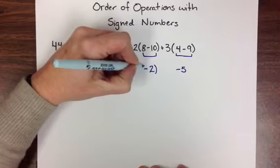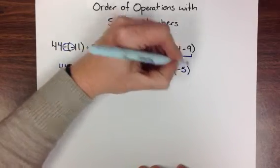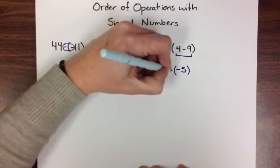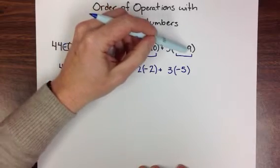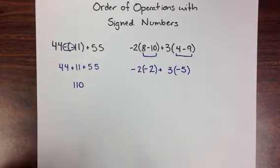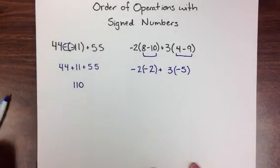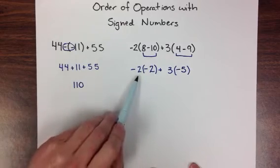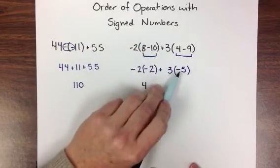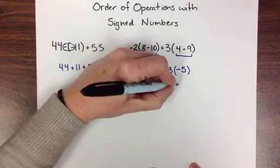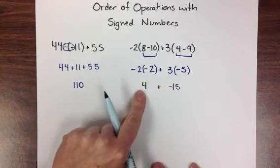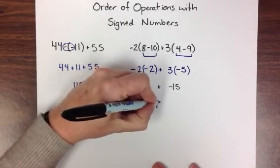I'm going to keep the parentheses even though I've completed the math inside, as a reminder of what is going on between the 3 and that negative 5, and the 2 and the negative 2 — because that operation is multiplication. Negative 2 times negative 2 gives me positive 4. 3 times negative 5 gives me negative 15. And when I add negative 15 and positive 4, I end up with negative 11.